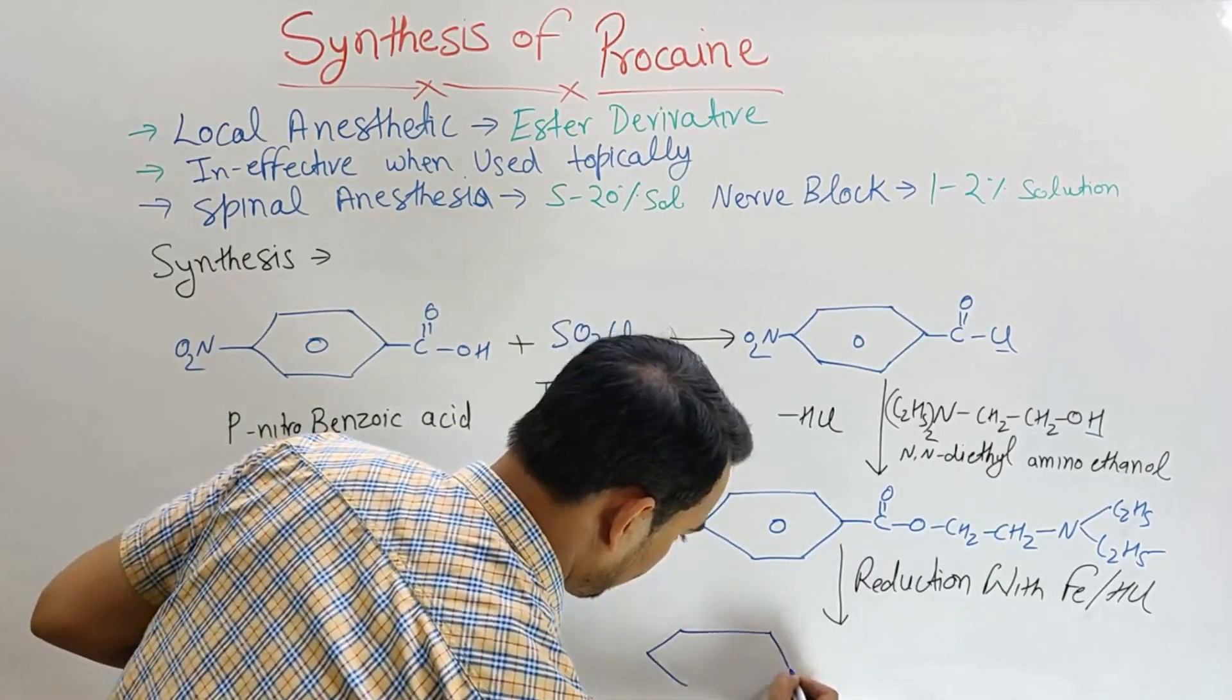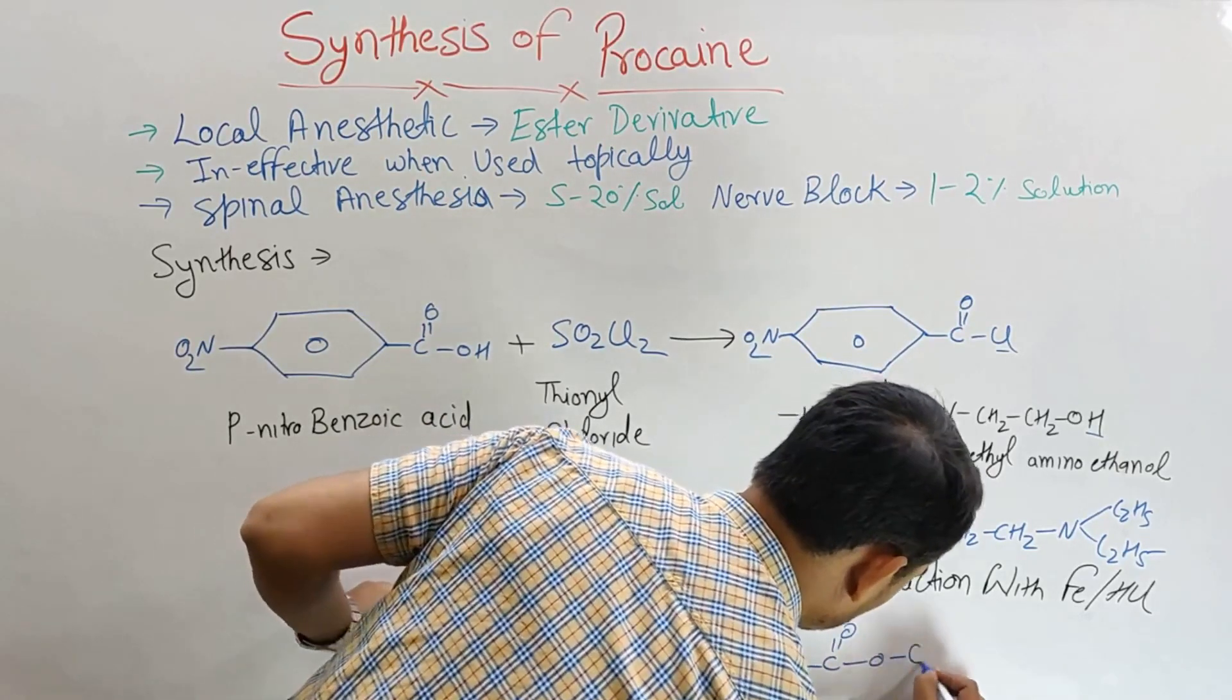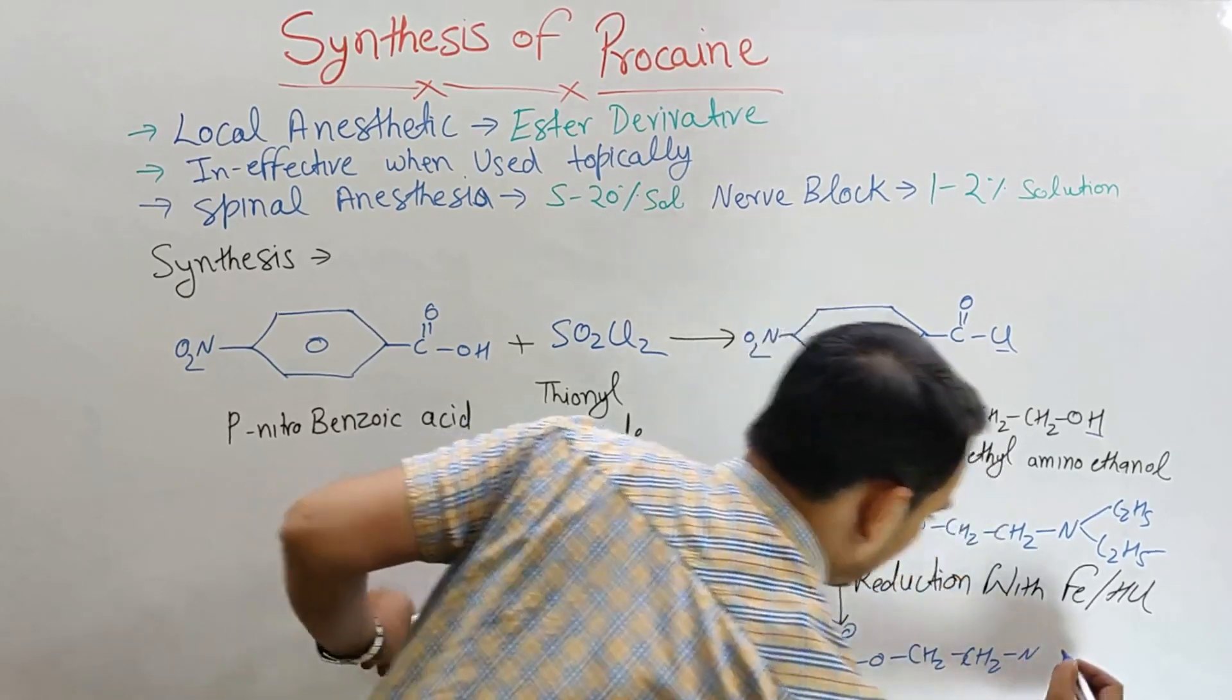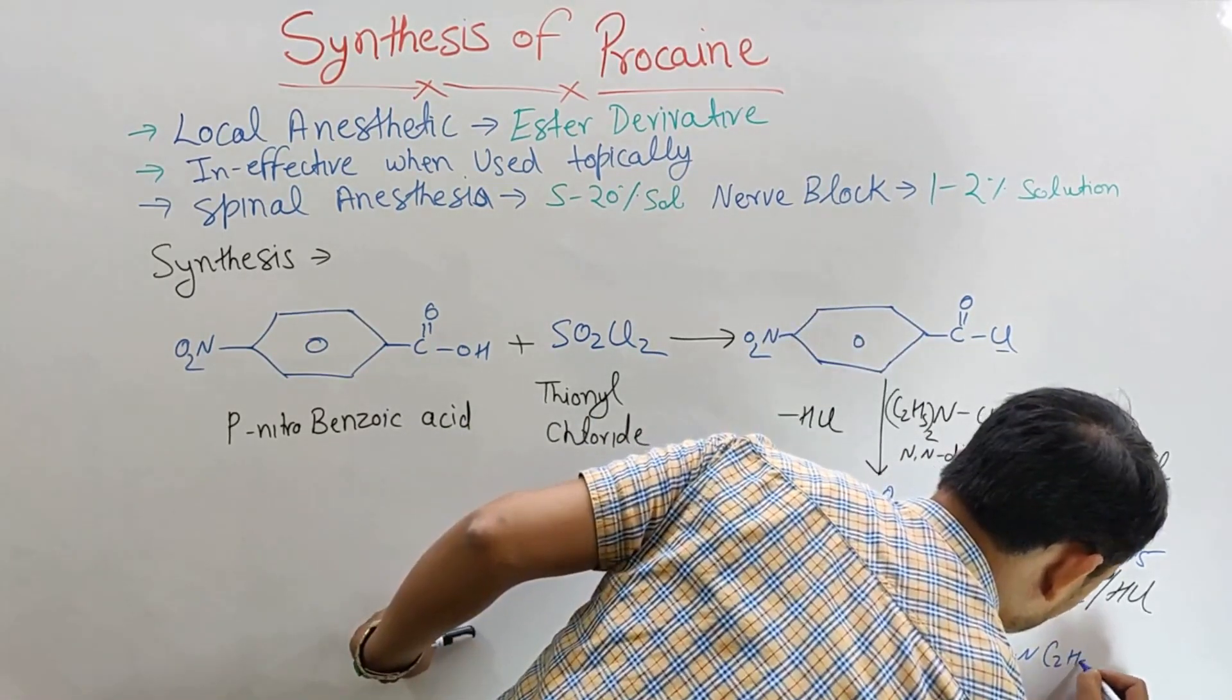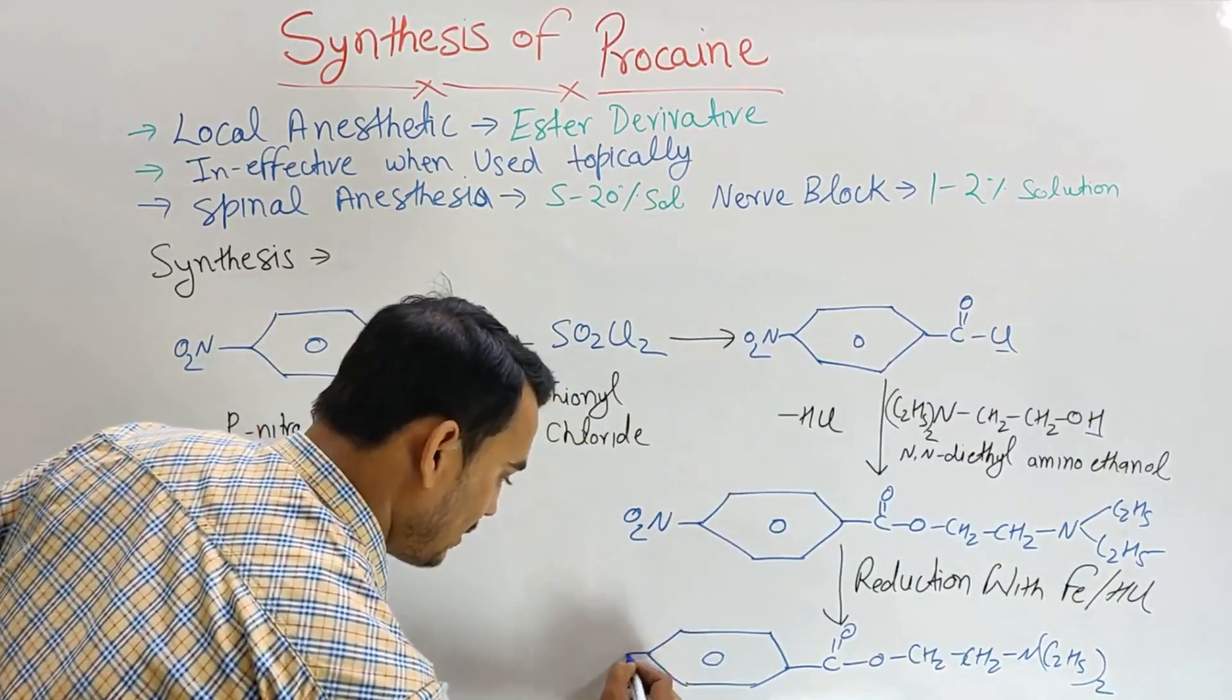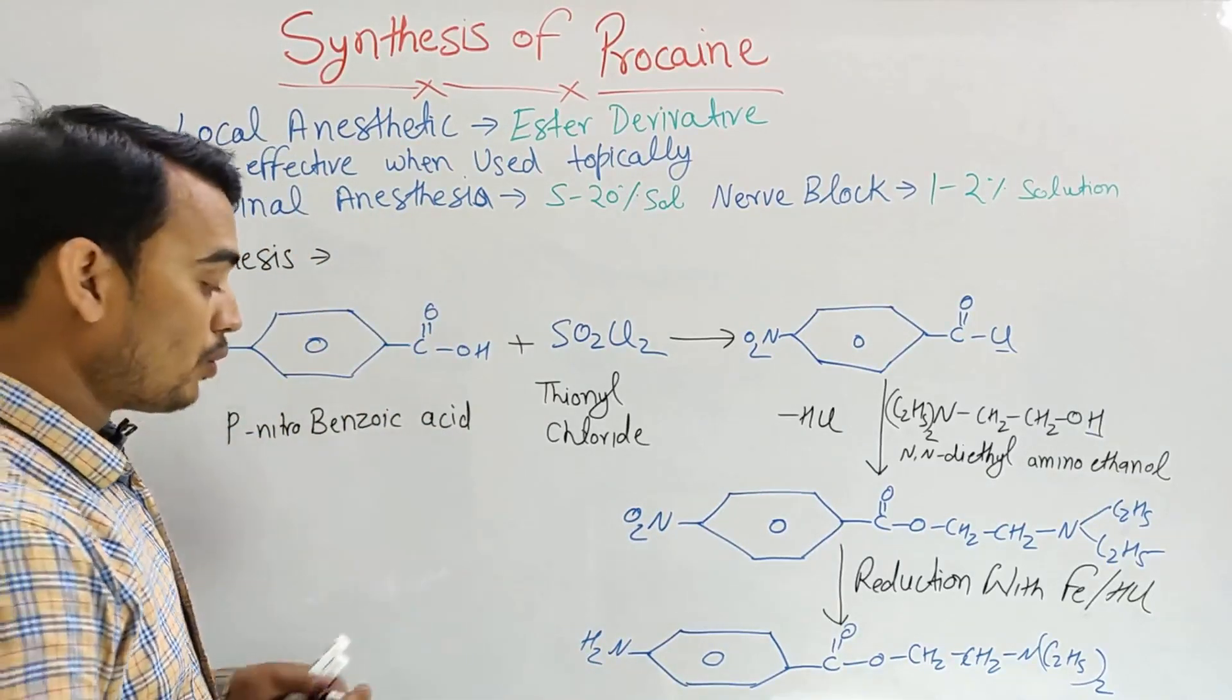Your resultant will be benzene-COO-CH2-CH2-N with C2H5 whole twice, and here it becomes NH2. This is your final product that is procaine.